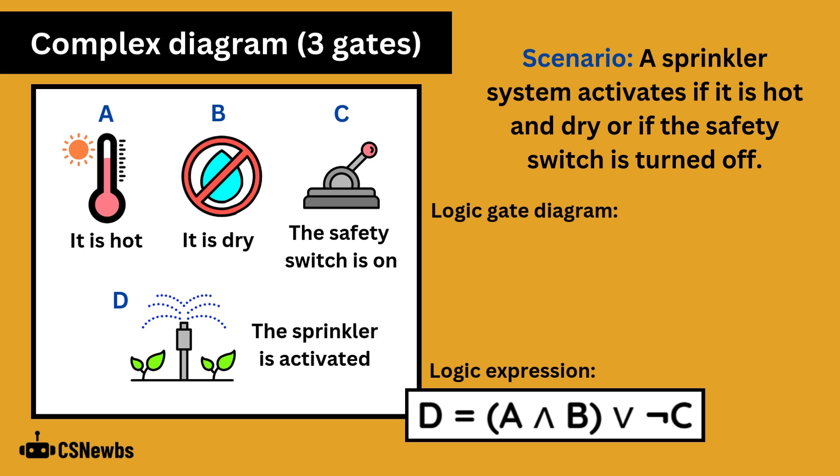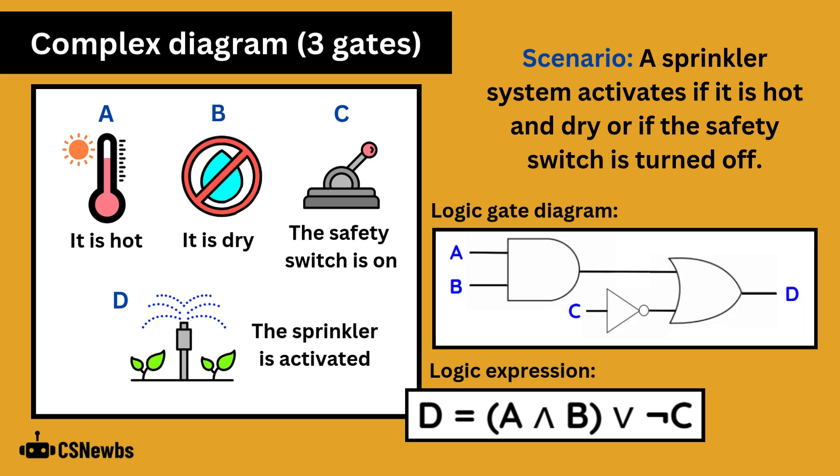So C represents the safety switch being on, so we need to use NOT C to represent the safety switch being off. And this is what the logic gate diagram would look like. A and B or NOT C is equal to D.